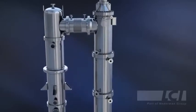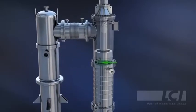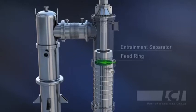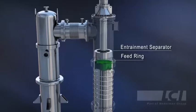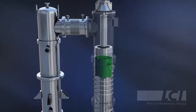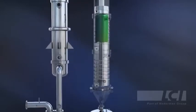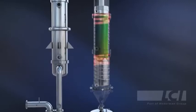Inside the chamber, there are some parts which are entrainment separator and feed ring. Our mixture and components will feed into the feed ring and the components will fall down and be evenly distributed over the inner surface.